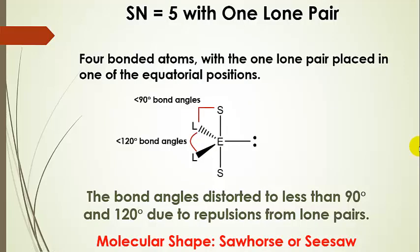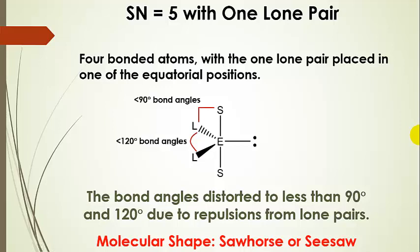Working off the basic geometry, if we end up with one lone pair on the central atom, we put it in one of the equatorial positions. Now we have one lone pair and four bonded atoms — steric number is still five. Lone pairs have sharp elbows and strongly repel the bonding electrons, so the bond angle between the equatorial plane and the axial position will be less than 90 degrees, and the other equatorial atoms are squeezed to less than 120 degrees. We name this shape based on atom positions: it's called the sawhorse or seesaw.